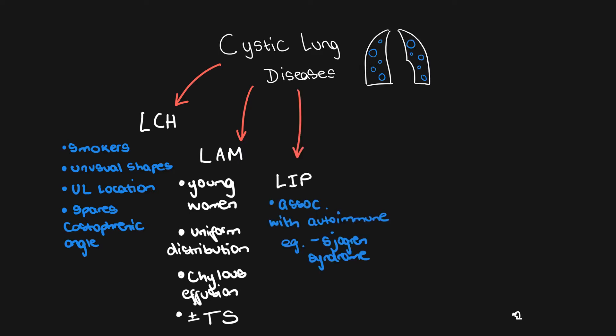The next differential to think about is lymphocytic interstitial pneumonitis, or LIP. This has slightly less specific appearances than LAM and LCH, but clinically it is associated with autoimmune diseases like Sjögren's syndrome. You can also see ground glass change and reticulonodular opacification with this disease.